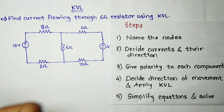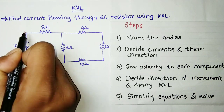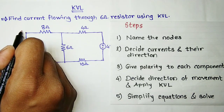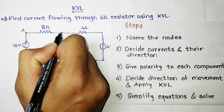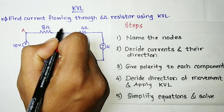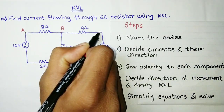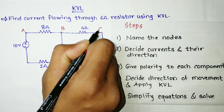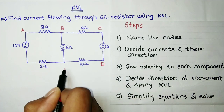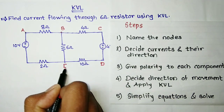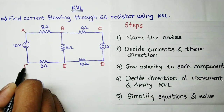So let us start with naming the nodes. This is our first node — let it be A. This is the second node — let it be B. This is the third node — C. Then this is D, E, and F.